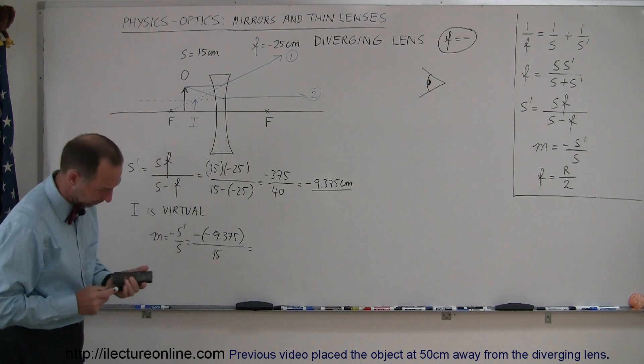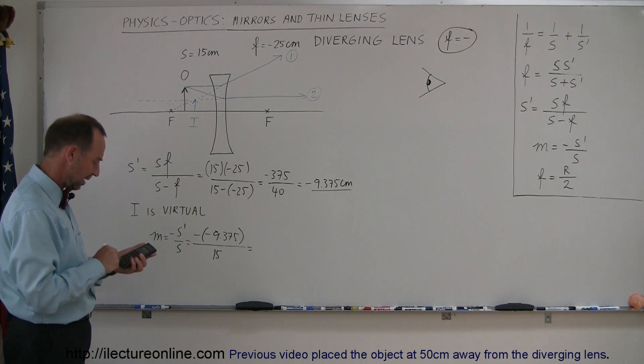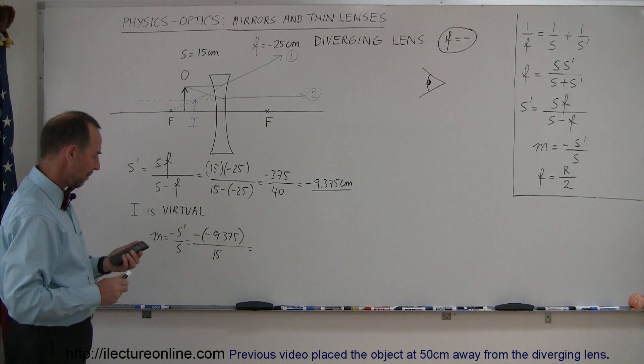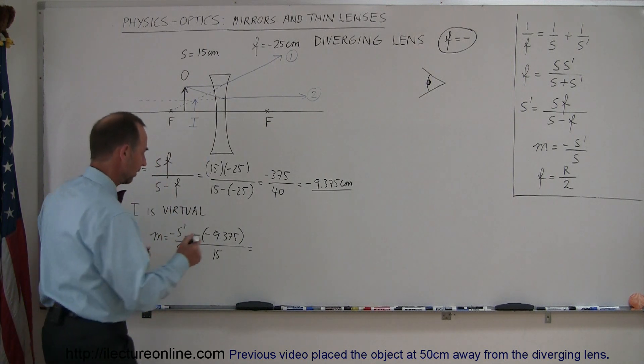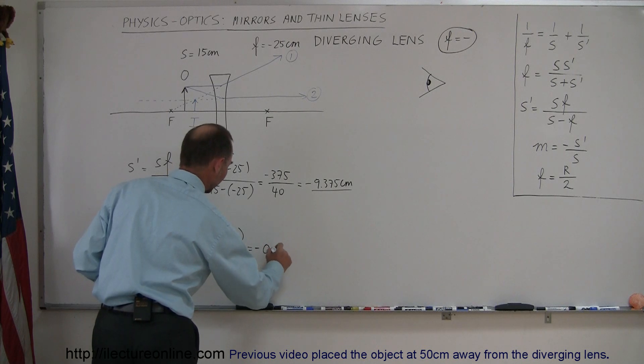And let's see here. Divide that by 15 equals, and it's a minus 0.25, minus 0.625, I should say.